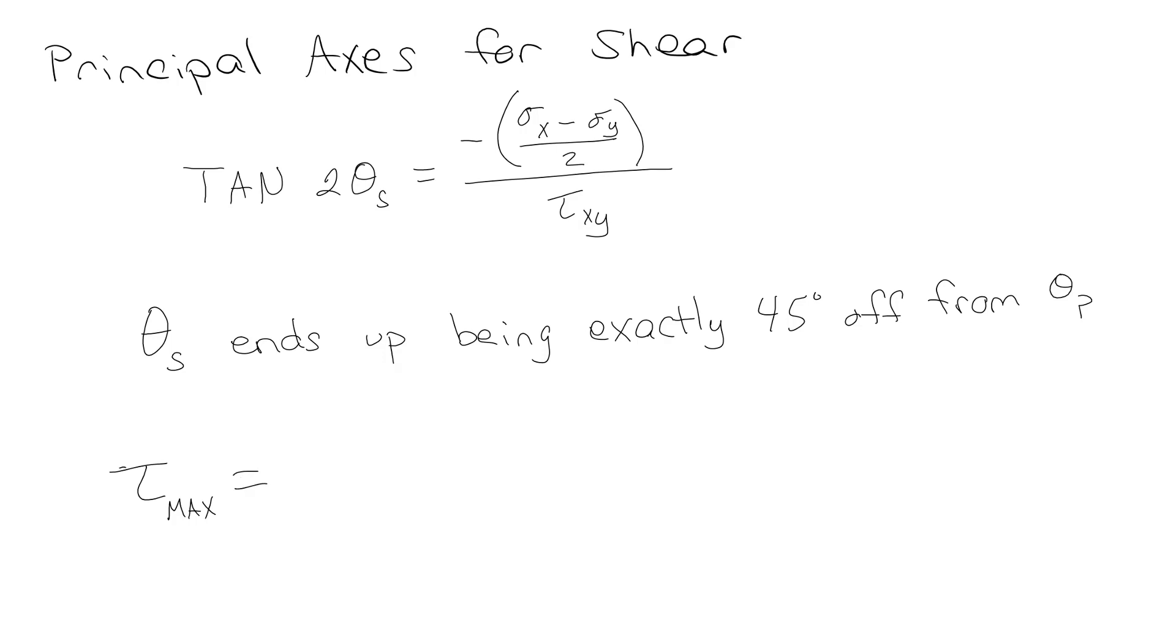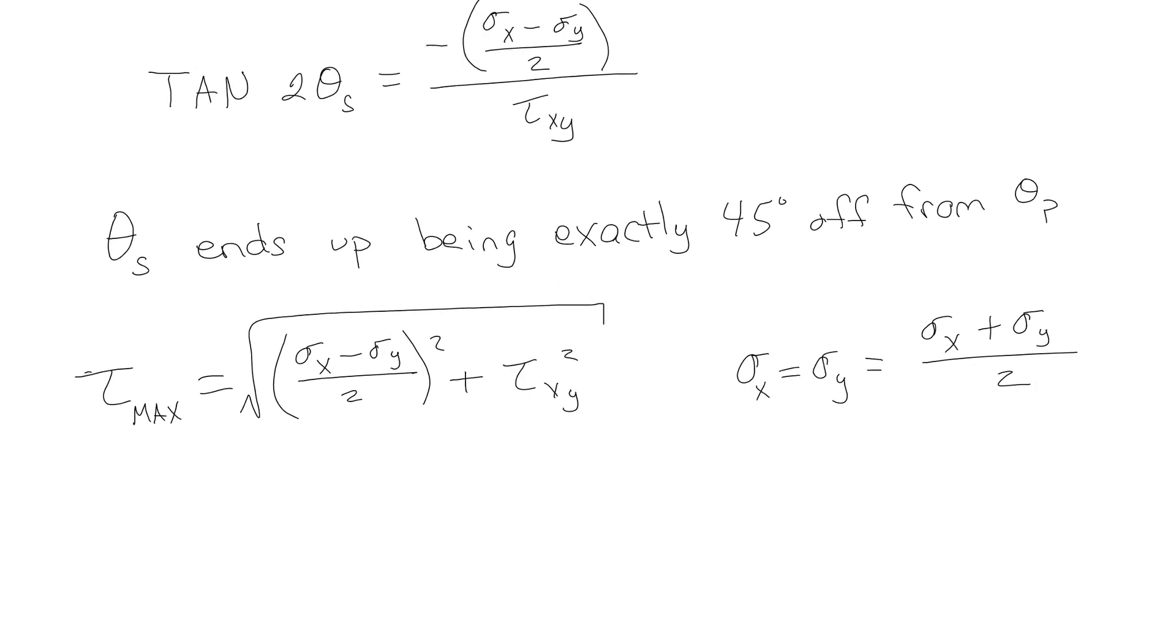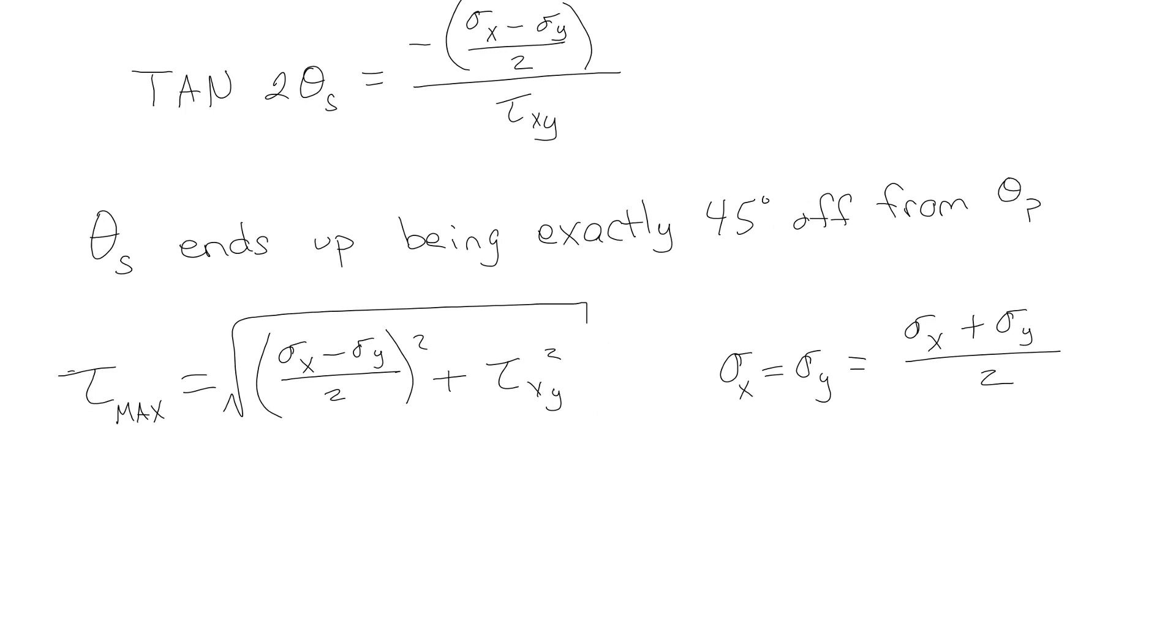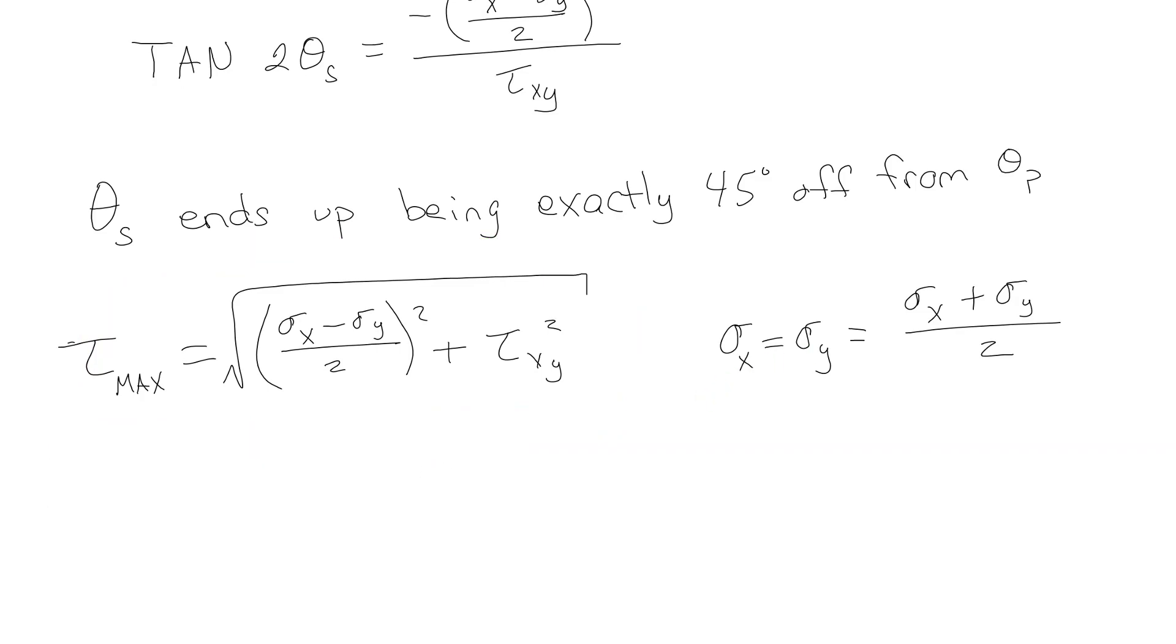But it ends up looking really pretty. So there are your values there. The maximum of the shear stress ends up being basically that hypotenuse. And then what ends up happening is the two, sigma X and the sigma Y, end up becoming equal and they actually just become the average of the two stresses that we started out with.